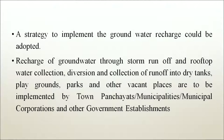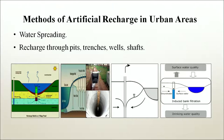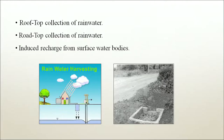A strategy to implement groundwater recharge could be adopted. This includes recharge through storm runoff and rooftop water collection, diversion and collection of runoff into dry tanks, playgrounds, parks and other vacant places, to be implemented by town panchayats, municipalities, and municipal corporations. Methods of artificial recharge in urban areas include: water spreading, recharge through pits, trenches, wells and shafts, rooftop collection of rainwater, road-top collection of rainwater, and induced recharge from surface water bodies.